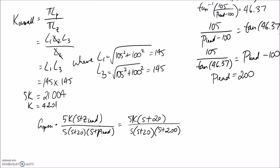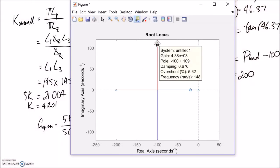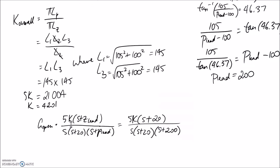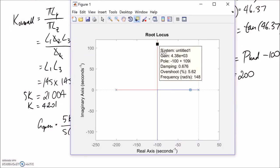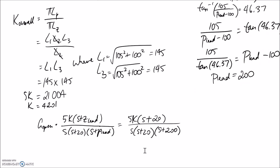Going back to the MATLAB root locus diagram, I'm looking for the point at about negative 100 plus or minus 105i. The closest point on the current root locus shows a gain of about 4300, which is close to our calculated value of about 4200. MATLAB is agreeing with our manual calculations. So with K equal to 4200, Z_lead at 20, and P_lead at 200, our closed-loop poles can sit on the desired point, meeting the transient requirements.